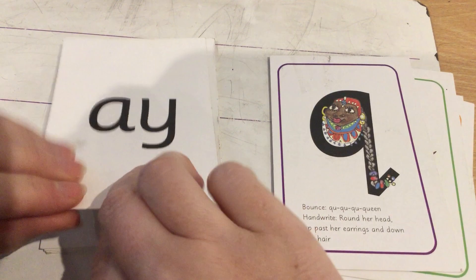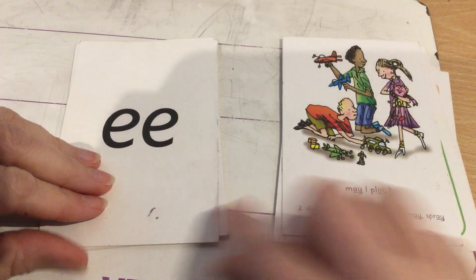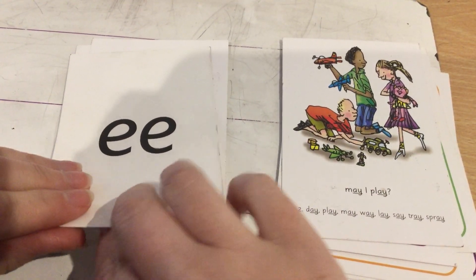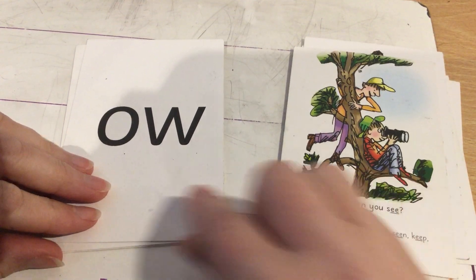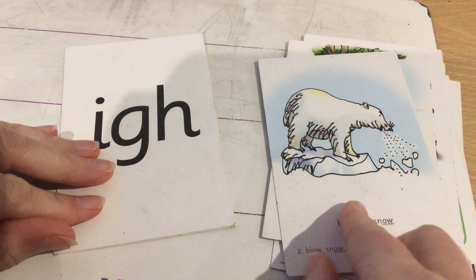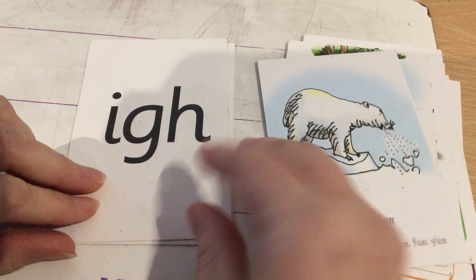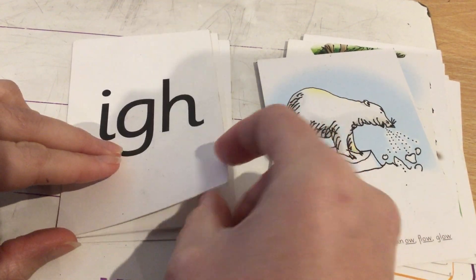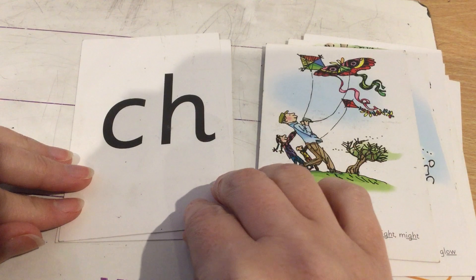A, may I play? E, what can you see? O, blow the snow. I, fly high. Ch, ch.